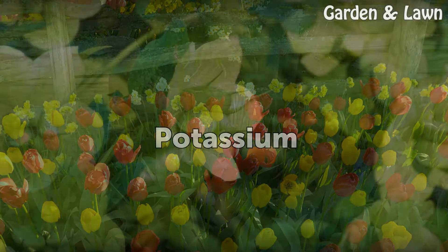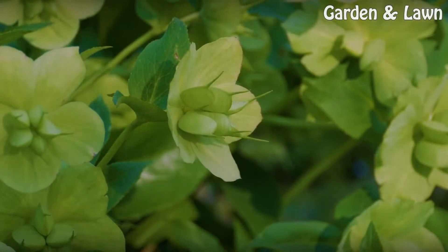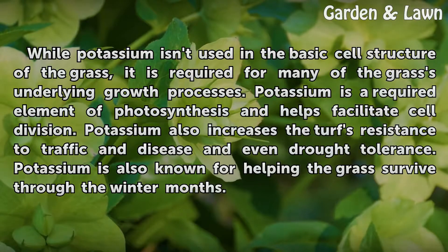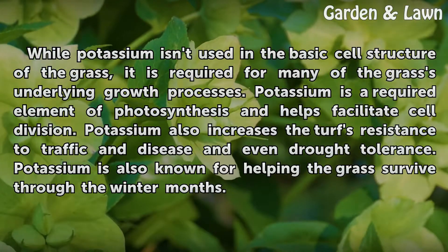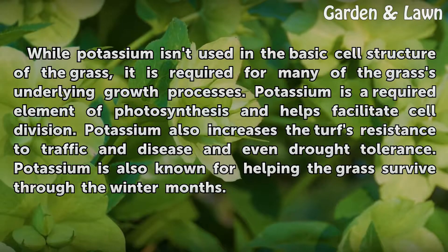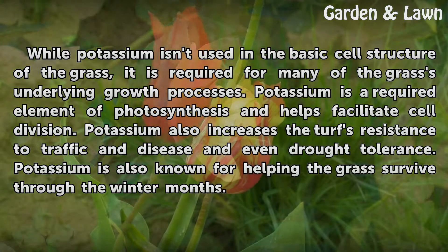While potassium isn't used in the basic cell structure of the grass, it is required for many of the grass's underlying growth processes. Potassium is a required element of photosynthesis and helps facilitate cell division. Potassium also increases the turf's resistance to traffic, disease, and drought tolerance, and is known for helping the grass survive through the winter months.